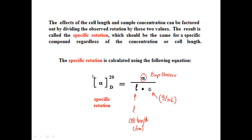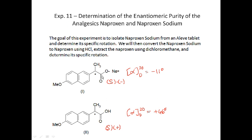Specific rotation is the physical property we use for chiral molecules. It's calculated by taking the observed rotation from the polarimeter and dividing by the cell length in decimeters and the concentration in grams per milliliter. Our cell is 1.1 decimeters, so you'll always use 1.1 decimeters as the cell length. Once you have the observed rotation from the instrument room, you can calculate the specific rotation and compare it to minus 11 degrees for naproxen sodium and plus 66 degrees for naproxen.